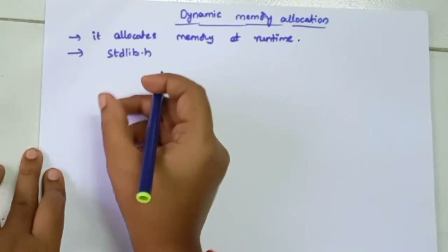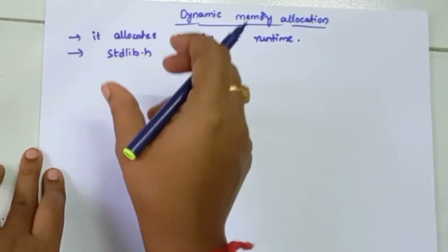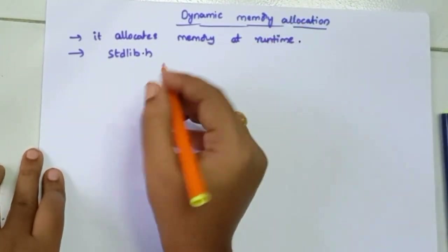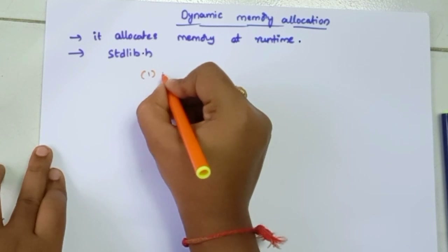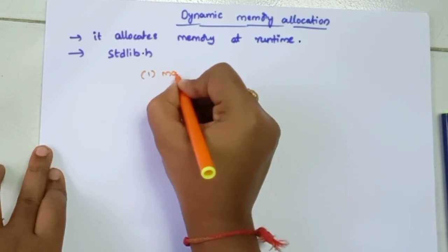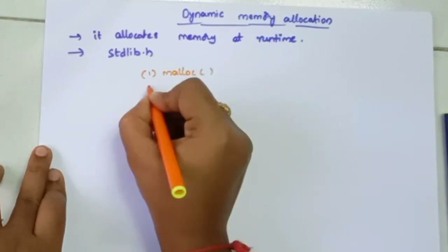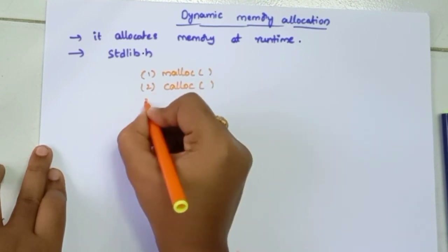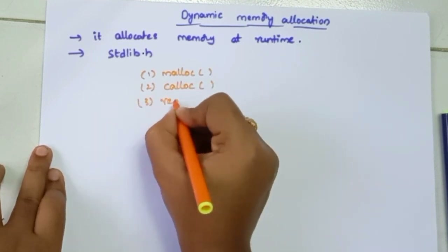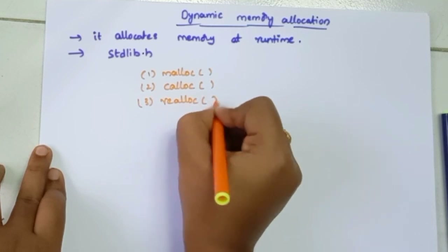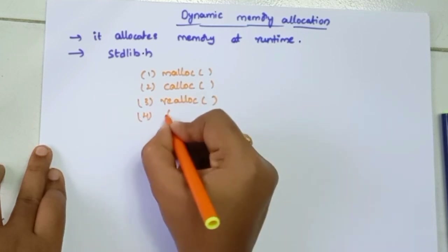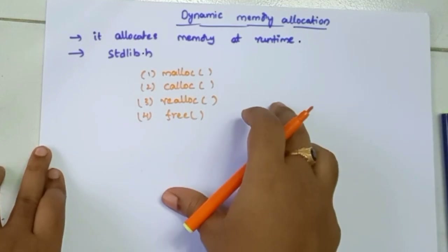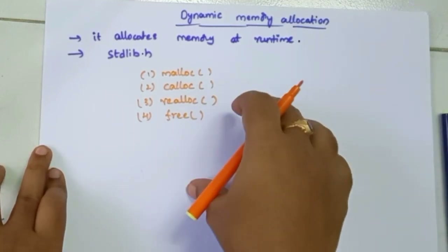In the main function, there are a total of four functions available in dynamic memory allocation. The first one is malloc, the second one is calloc, the third one is realloc, and the fourth one is free. So total four functions are available in dynamic memory allocation.